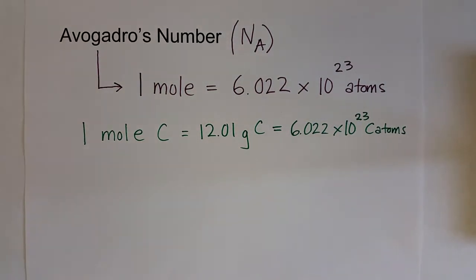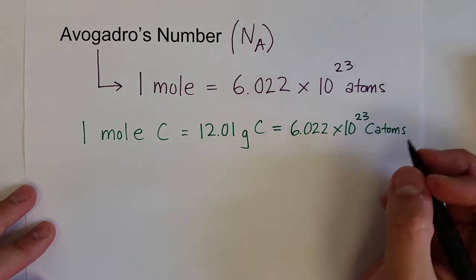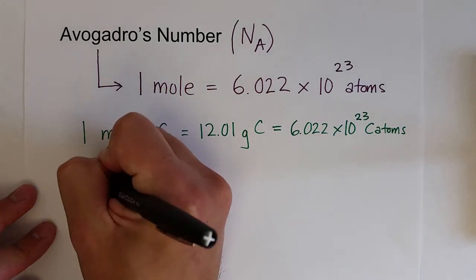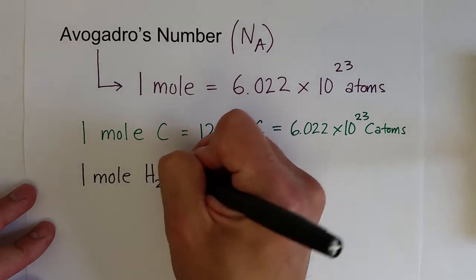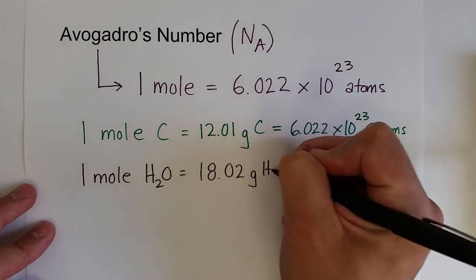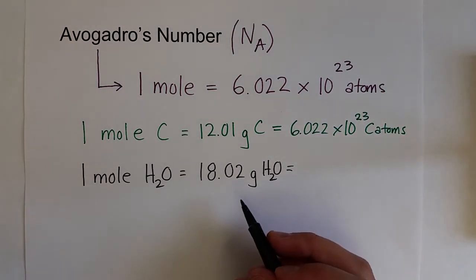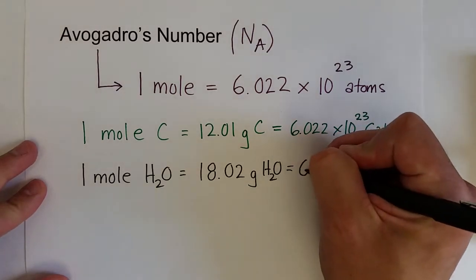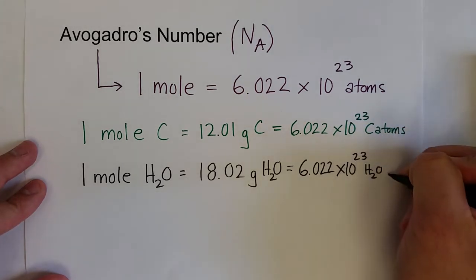The mole is a collection term, and just like a dozen can mean different things — a dozen donuts, a dozen eggs — the mole can also be used for other particles, including atoms, electrons, or molecules. One mole of water has a mass of 18.02 grams. And in that sample of water — less than an ounce — there are 6.022 times 10 to the 23rd water molecules.